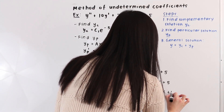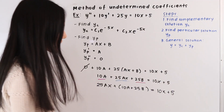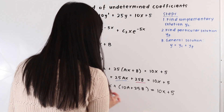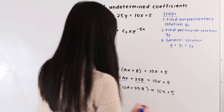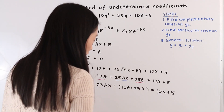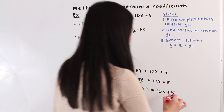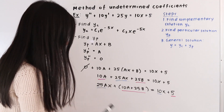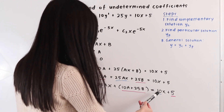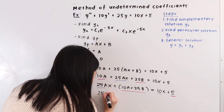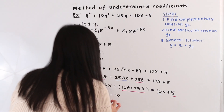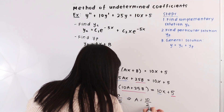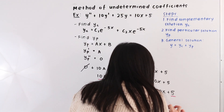We set the coefficients on the left hand side equal to those on the right hand side. For the x terms, the coefficient on the left is 25a and on the right is 10. Setting them equal: 25a equals 10, and dividing both sides by 25, we get a equals 10 over 25, which simplifies to 2 over 5.